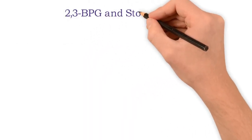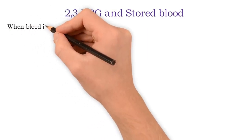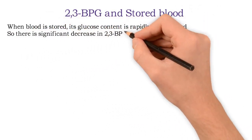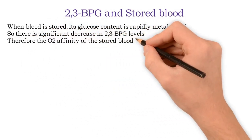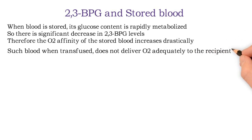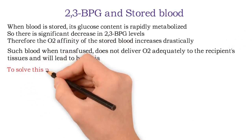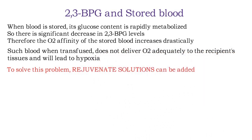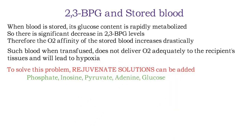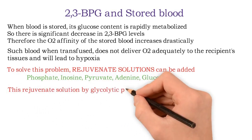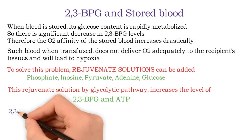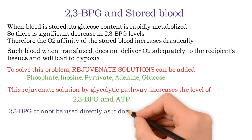When blood is stored, its glucose content is rapidly metabolized, causing a significant decrease in 2,3-BPG levels. Therefore, the oxygen affinity of stored blood increases drastically. When such blood is transfused, it does not deliver oxygen adequately to the recipient's tissues and leads to hypoxia. To solve this problem, a rejuvenate solution can be added, containing phosphate, inosine, pyruvate, adenine, and glucose. This rejuvenate solution increases the levels of 2,3-BPG and ATP via the glycolytic pathway. Note that 2,3-BPG cannot be used directly as it does not enter the RBCs.